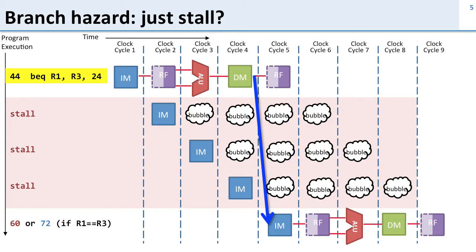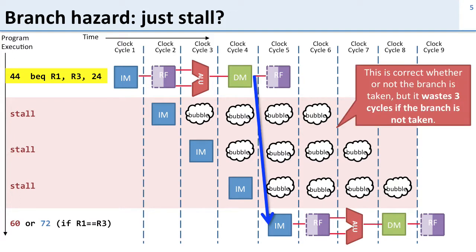So what we said was, well, we can just stall. We can put in bubbles in the pipeline for those three cycles, and this works fine. This is correct whether or not the branch is taken, but it wastes three cycles. This is an incredible waste of processing power, and so we want to try and avoid doing this.